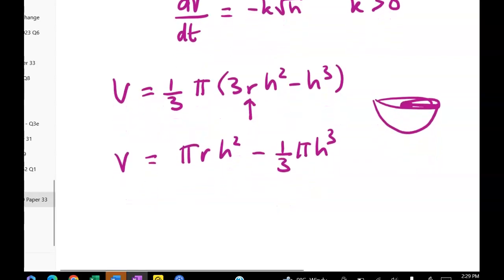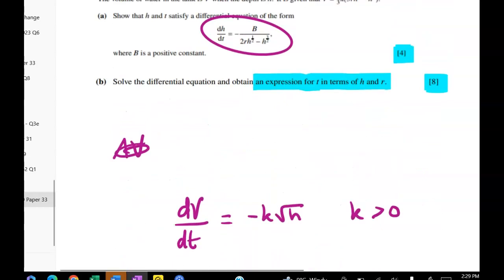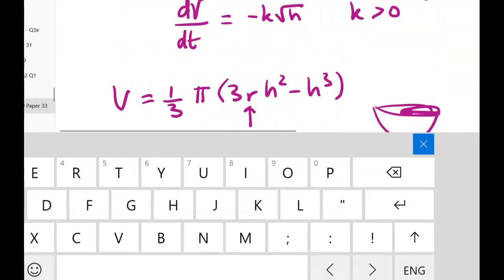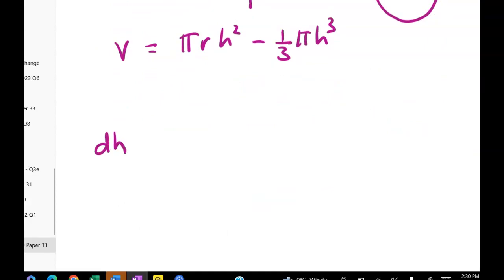So we want to get dV/dT - no we're given dV/dT and we want to get dH/dT. So we can write out a little chain rule relationship. So dH/dT will be dH/dV times dV/dT. We know that one and we've got to work this one out.